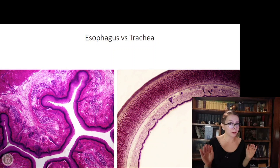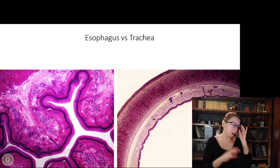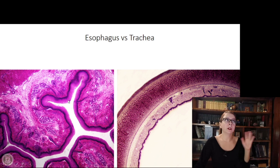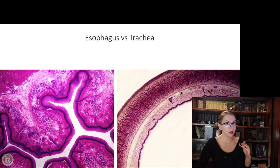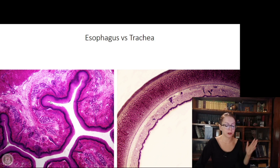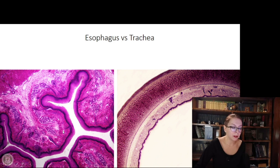Now we have the esophagus and the trachea — very easy to distinguish, though both are tubular hollow organs. In the esophagus, we have stratified squamous non-keratinized epithelium, which is very unique for the digestive tube. Starting from the stomach onwards, we have only simple epithelium up to the rectum. So if you see a stratified squamous hollow organ, this should be the esophagus.